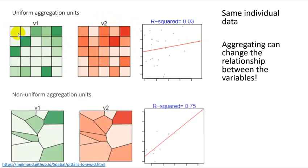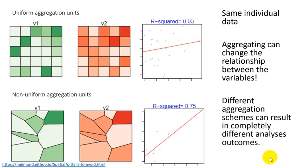Let's plot it up with the other aggregation scheme. So with a more non-uniform aggregation, now we're taking the average for this polygon and this polygon. And look what's happened to our relationship. We've completely blown it up. Completely different analyses outcomes due to the aggregation scheme.